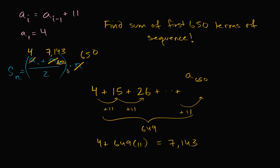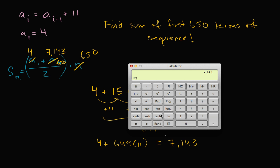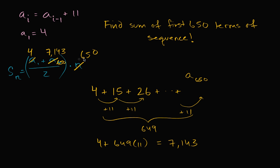And so now we can just evaluate this. So we have 7,143 plus four, plus the first term, which equals that. We're going to divide by two, which gets us 3,573.5. And we're going to multiply that times 650, that's how many terms we have. Times 650 equals 2,322,775.